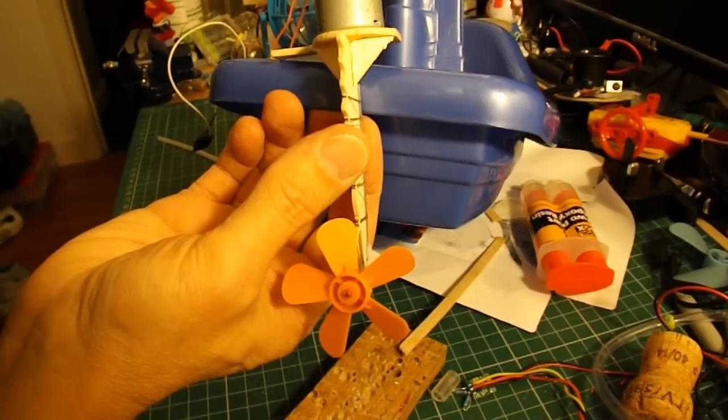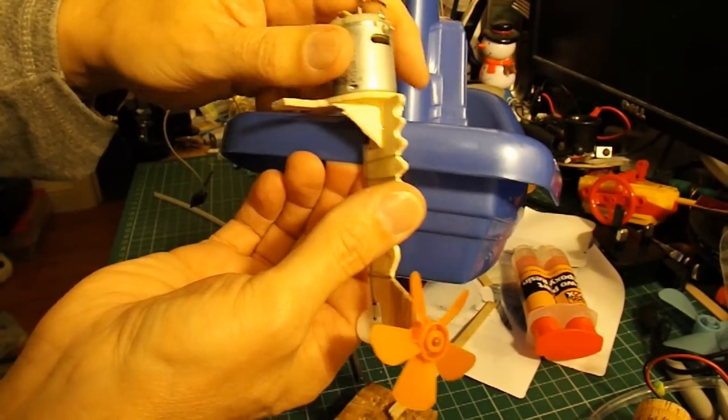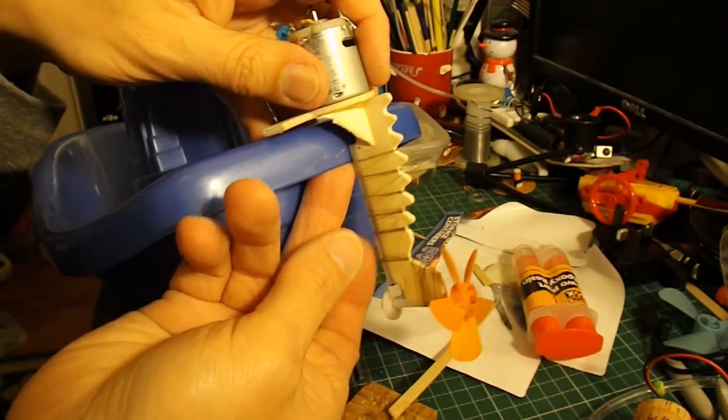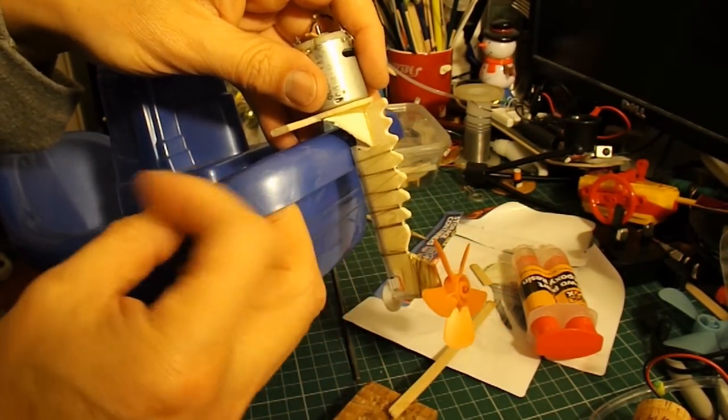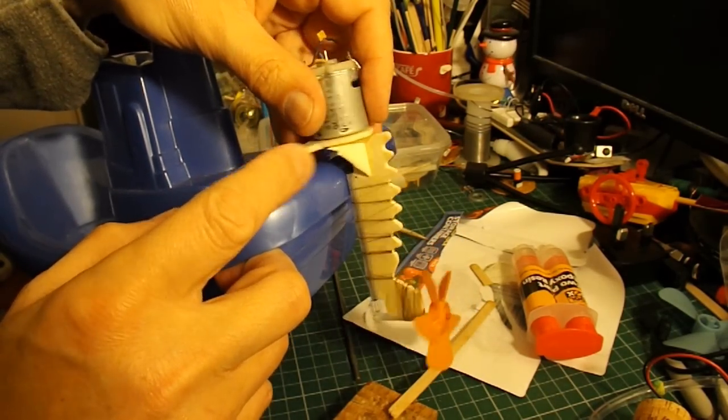Just move the camera up a bit. There we are. You can see a bit better now. So we need some sort of hinge on the back here, and then a servo just to pull that arm.